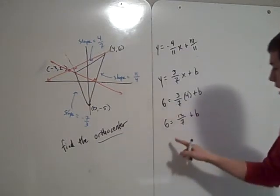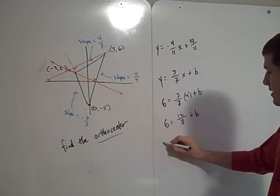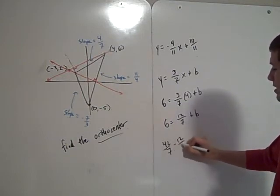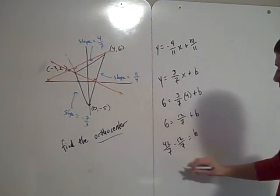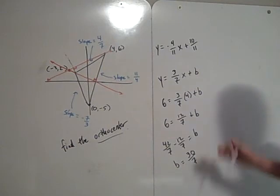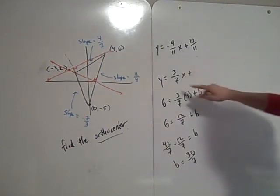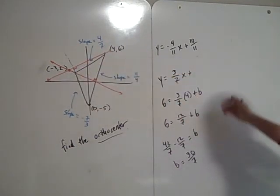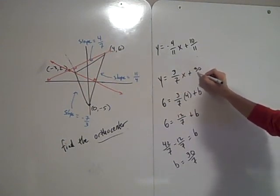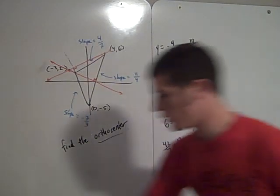6 equals 12 over 7 plus B. Subtract 12 sevenths. 6 is 42 sevenths, so 42 sevenths minus 12 sevenths equals B. And thus B equals 30 sevenths. So my equation of this altitude of the triangle is y equals 3 over 7x plus 30 sevenths. Okay!